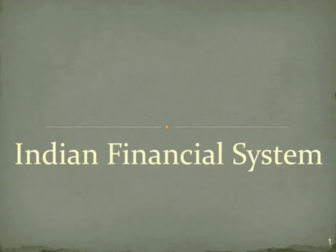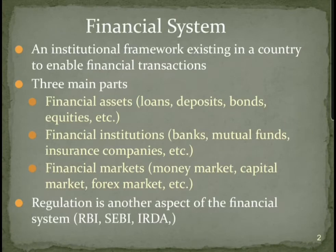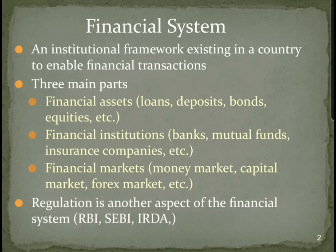Hello students, today I am going to enlighten you about the Indian financial system. A financial system exists in a framework which enables us to transact financial transactions. A financial transaction is an action which takes place between two individuals or two parties. It consists of three main parts: financial assets, financial institutions, and financial markets. We will discuss all of these individually.